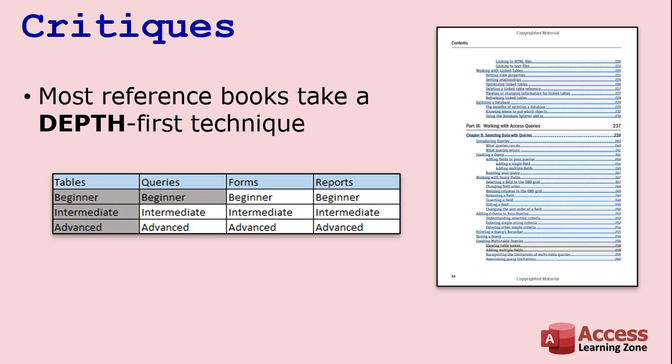Most reference books, including the Access Bible, take a depth-first technique because that's how it's easiest to arrange information for advanced users. I understand — I've written books before. It's easier to put all the stuff about tables together, then all the stuff about queries together, then forms, then reports, and so on. However, with this approach, you spend a ton of time learning everything there is to know about tables before you even learn much about queries, forms, and reports. It's harder to get a better understanding of the overall picture of how a database works.